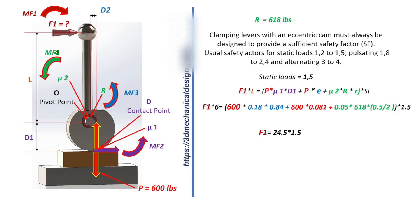F1 = 24.5 × 1.5 = 36.75 pounds. Force on the handle F1 = 36.75 lbs. I hope you will find this video useful.